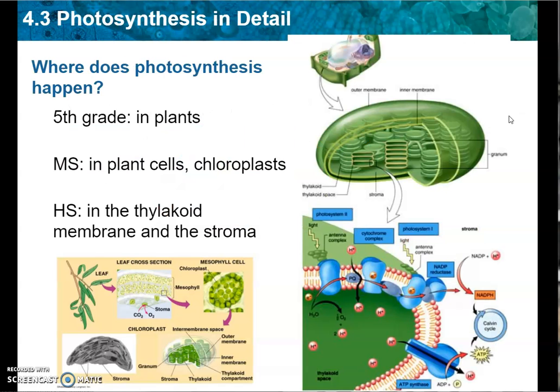So where does photosynthesis happen? In elementary school you probably learned it happens in plants. Then in middle school, you learned it happened in plant cells, and maybe even in the chloroplast. Now that you're in high school, you'll learn that it actually happens inside the chloroplast on something called a thylakoid membrane, and it also occurs in the stroma.